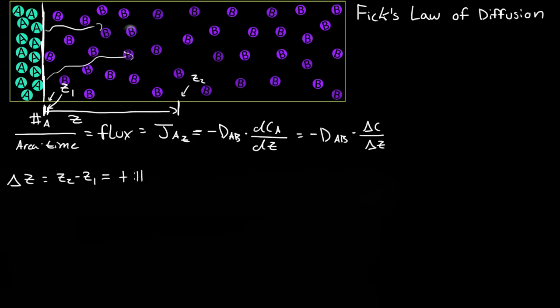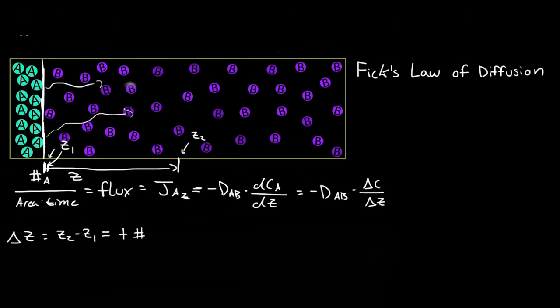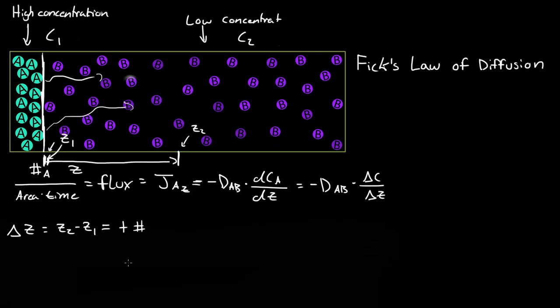What about this delta C? Well C is just a concentration, so this is a high, A is in a high concentration, and it's going to a low concentration. So we'll call this C1 and C2. So then what is delta C? Well delta C is just equal to C2 minus C1.